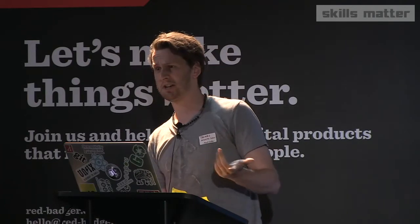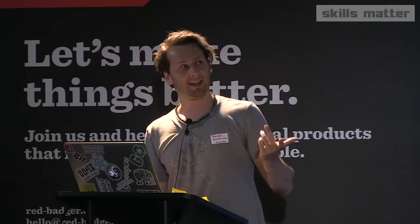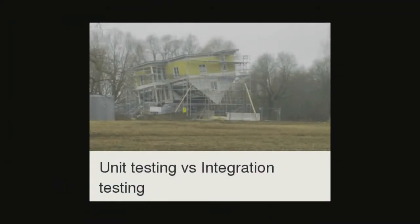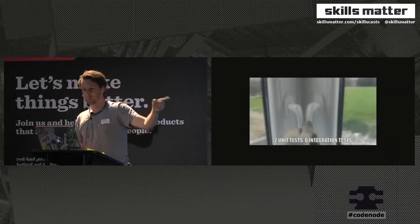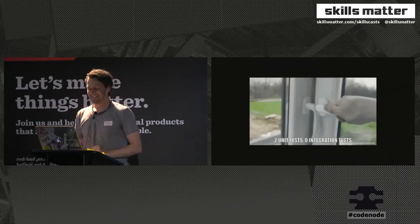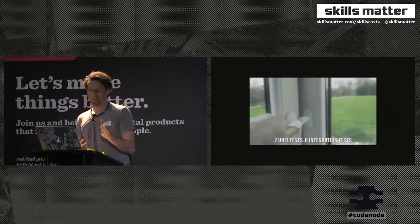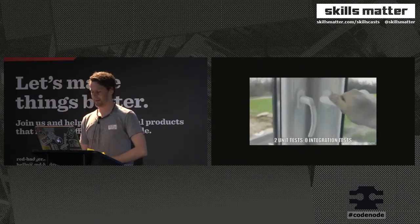With unit tests you can end up with something like this — where the windows are great, you unit tested them, and all the other pieces were unit tested, but you just didn't quite get it right — it's upside down. Or here's another problem: these two doors work perfectly, unit tested to perfection, but when you try to work with them together it's not quite doing the job. This explains why unit tests aren't the be-all and end-all of solving your problems.